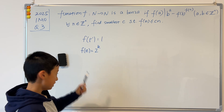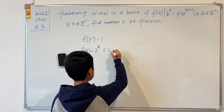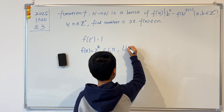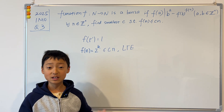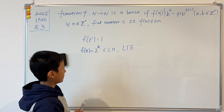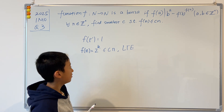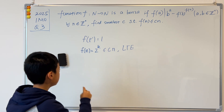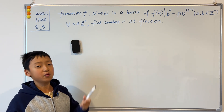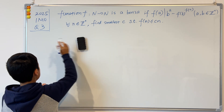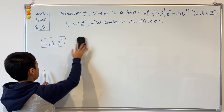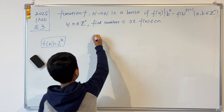The question wants f(n) ≤ c·n. This reminds us of something called LTE — Lifting the Exponent. LTE is a really big branch in math with many different theorems and lemmas. I'm just going to use one specific one. Let me first explain the function f(n) = 2^k that LTE applies to.